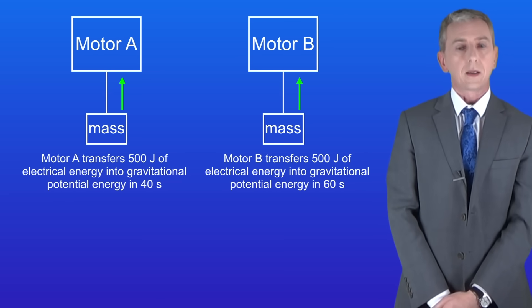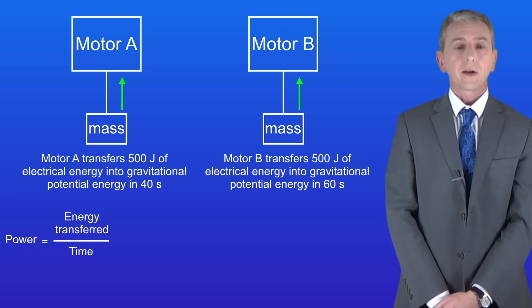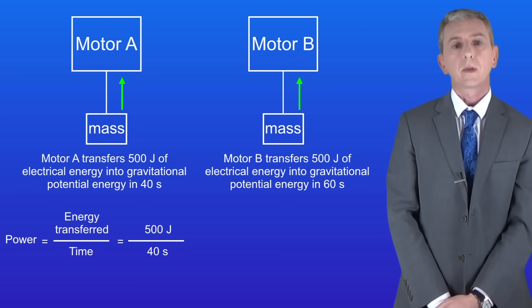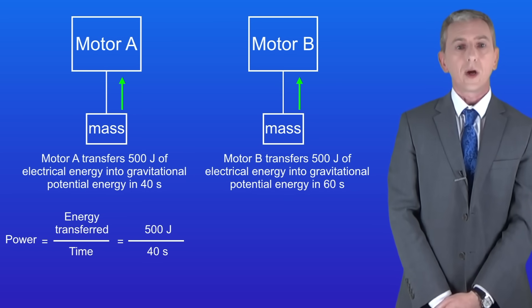Let's start with motor A. The power is the energy transferred divided by the time. In this case the energy transferred is 500 joules and the time taken is 40 seconds. Putting these into the equation gives us a power of 12.5 watts.